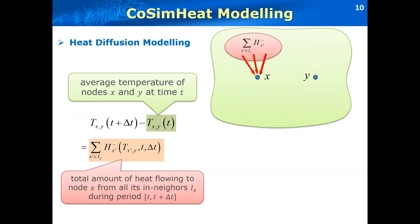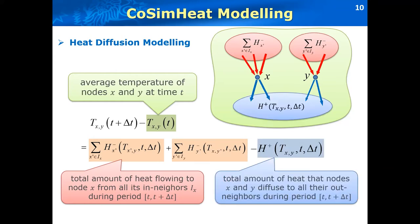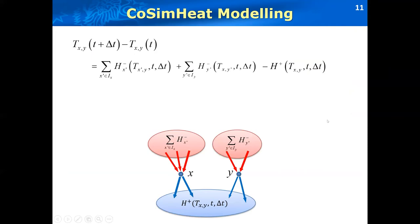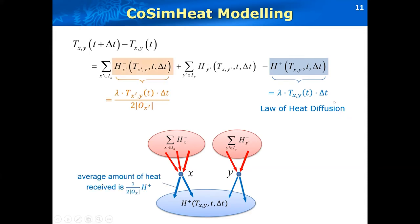Then the variation of this temperature from the time T to T plus delta T consists of three parts. The first part is the total amount of heat received at node X from all its in-neighbors, denoted as H minus X prime. And the second part is the total amount of heat received at node Y from all its in-neighbors. And the third part is the total amount of heat that node X and Y diffuse to all their outer-neighbors during the period. So when we rearrange the terms according to the law of the heat diffusion, you'll see that H plus this part is proportional to the period delta T, and the temperature between the node X and Y at the time T. And similarly, in these two parts, it can also be represented as follows.